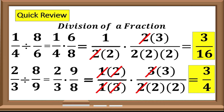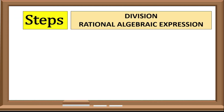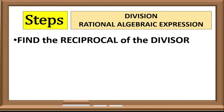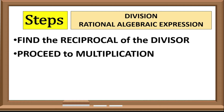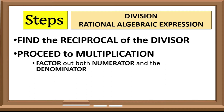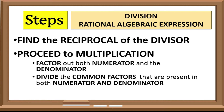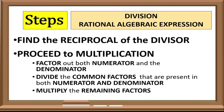I think you are ready now in dividing rational algebraic expressions. But first, we need to know the steps. First, find the reciprocal of the divisor. Second, proceed to the multiplication. The steps for multiplication are: first, factor out both numerator and denominator; second, divide the common factors present in both numerator and denominator; and lastly, multiply the remaining factors.